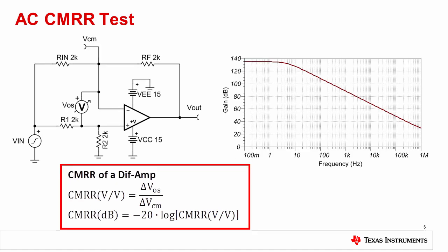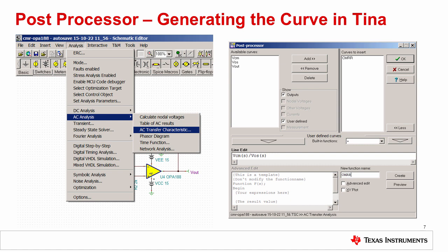AC common mode rejection is simulated using the same test circuit that was used for DC CMRR. To get the best results, make sure that the test conditions such as load resistance are observed. Also, a post processor tool will be needed to generate the curve using the standard CMRR equations. This slide shows the Tina Spice post processor tool. This tool can be used with any analysis that generates curves such as transient, DC sweep, or AC analysis.